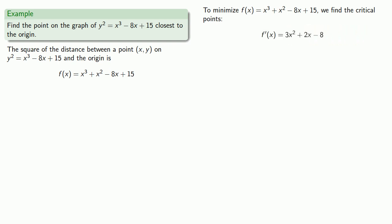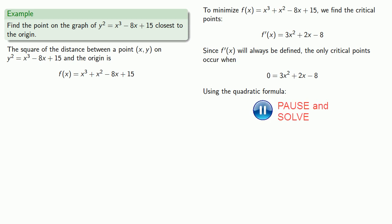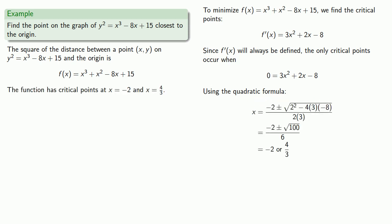Since f prime is a polynomial, it will always be defined, so the only critical points are going to occur when the derivative is equal to zero. So using the quadratic formula to solve this equation gives us a critical value of minus 2 or 4 thirds.